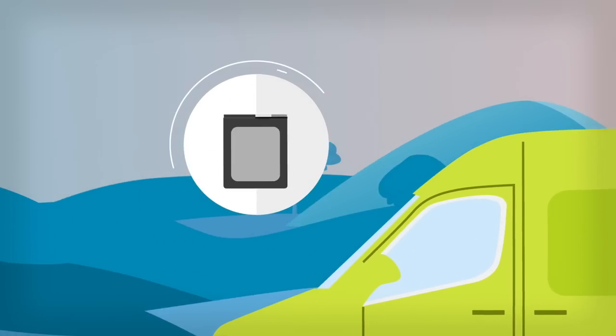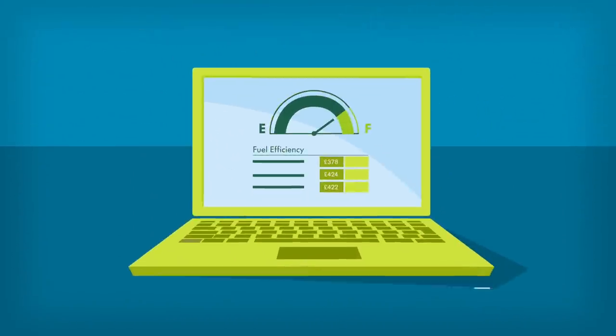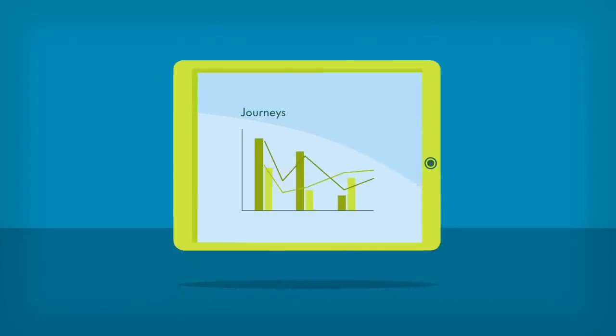With a Volkswagen Commercial Vehicles Telematics unit in each van, you can see if they're running as efficiently as possible on a laptop, tablet or mobile.